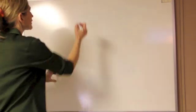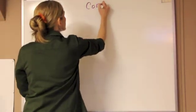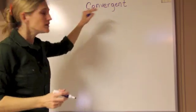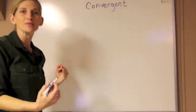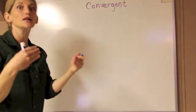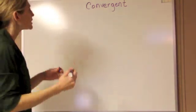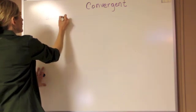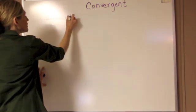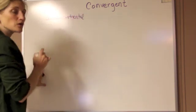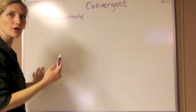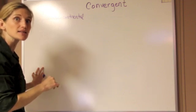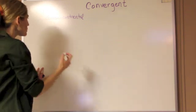We're going to start by looking at convergent plate boundaries. There are actually three subtypes of convergent plate boundaries, and it just tells us what type of plate is colliding with what type of other plate. The first example would be an oceanic-continental convergent plate boundary, where an oceanic lithospheric plate is colliding with a plate that has continental lithosphere or crust at that edge.